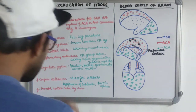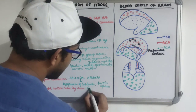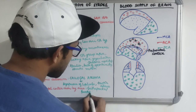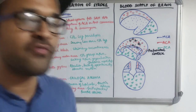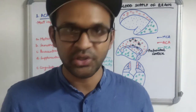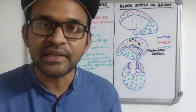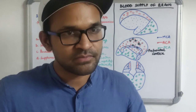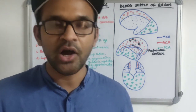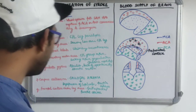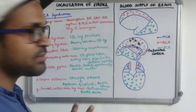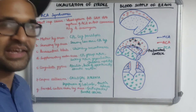Involvement of the frontal cortex near the leg area results in gait apraxia, also called frontal ataxia. The patient has difficulty initiating walking, walks with broad-based small steps, and tends to fall backward — even though power and coordination are normal when tested lying or sitting. Involvement of the prefrontal cortex causes cognitive and behavioral impairment. If a patient presents with this complex of symptoms, one should think of anterior cerebral artery syndrome.